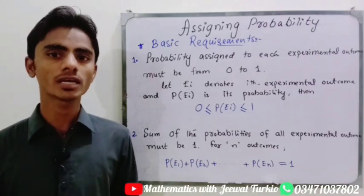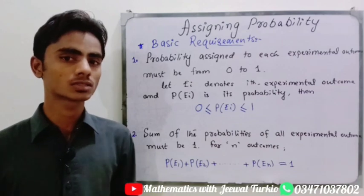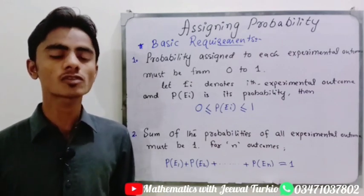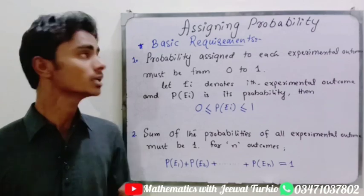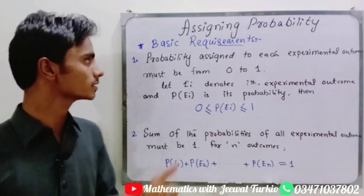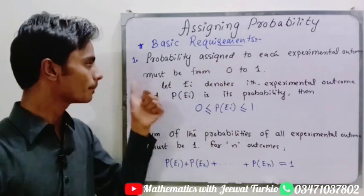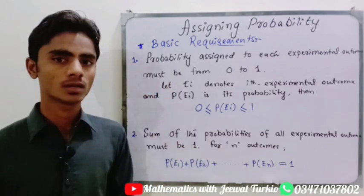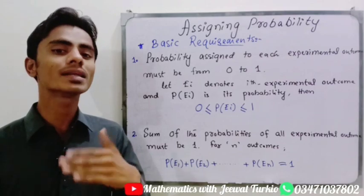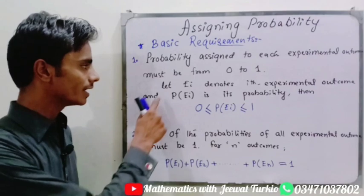Assalamu alaikum guys. Today we are going to discuss how we can assign probabilities to experimental outcomes and events. First we will see the basic requirements for assigning probability. The first requirement is the probability assigned to each experimental outcome must be from 0 to 1.